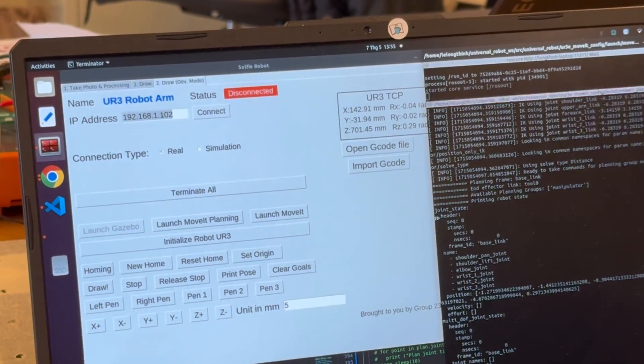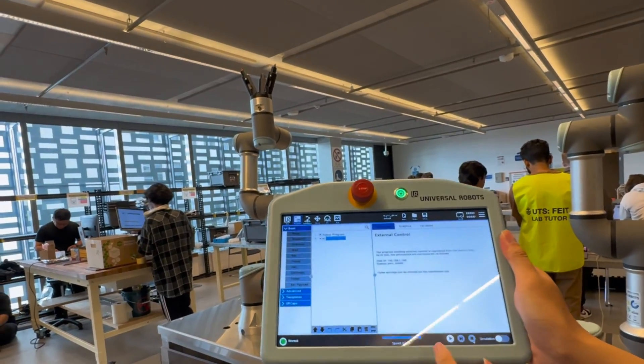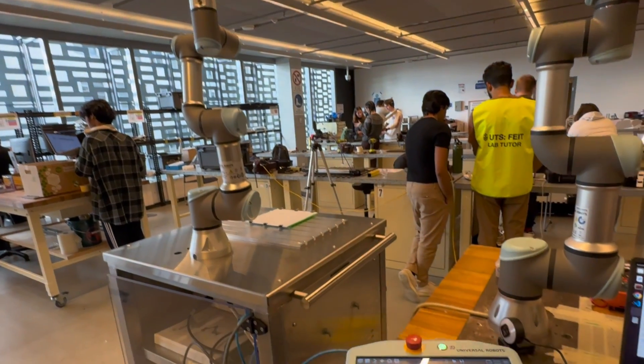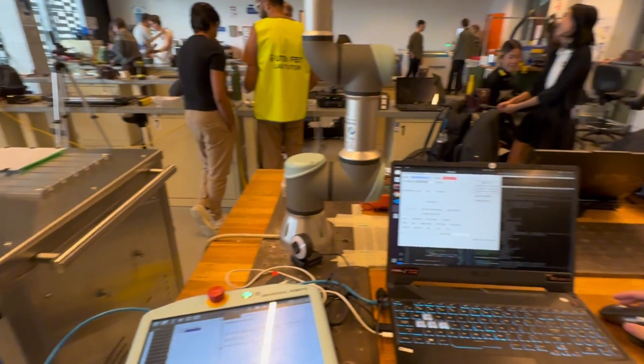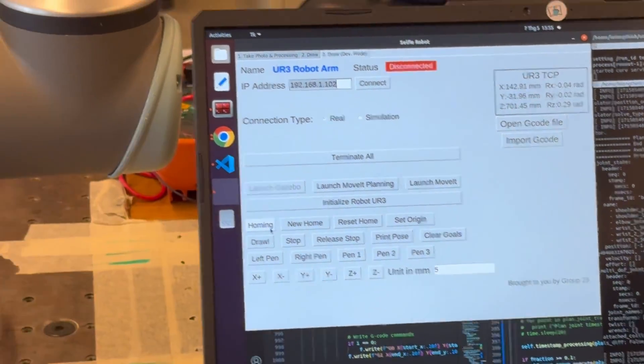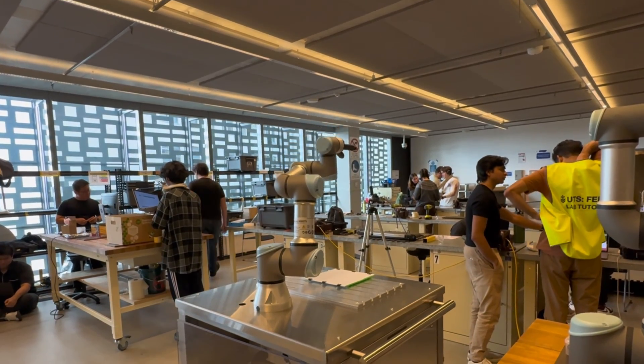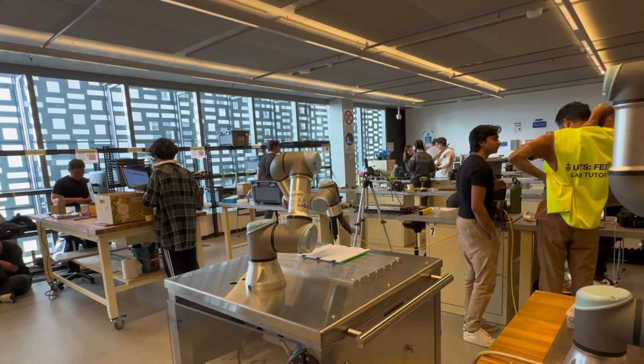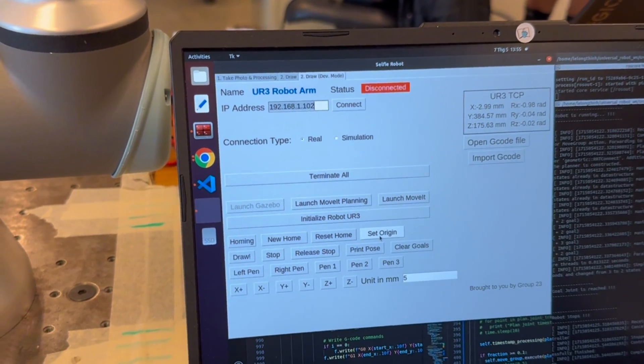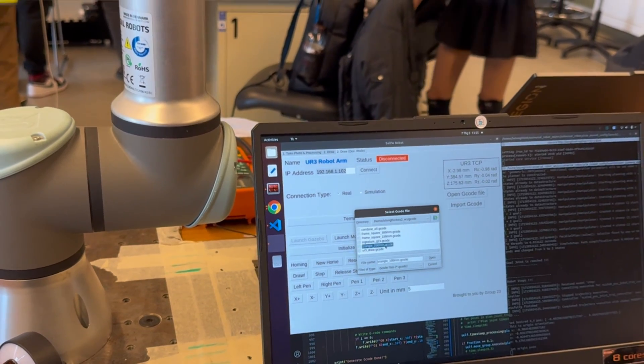Now we can control the robot with all the buttons inside the GUI. By the way, after you run the UR robot driver on laptop, you need to run the same driver on the robot. Let's start with the homing button. Yes, the robot can be controlled properly. After homing the robot, we need to set the origin so that the image will be offset to the current position.